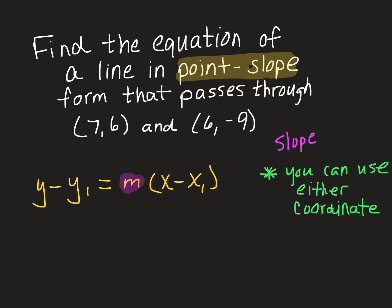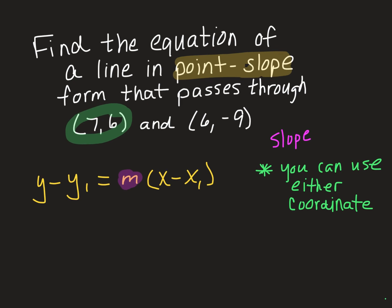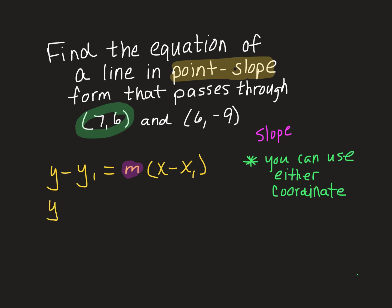So I am just going to choose the first coordinate for no particular reason, just because it's the one that is there first. So I'm going to do that part here where I've got y minus, and I'm going to substitute, instead of writing y₁, I'm going to replace y₁ with 6 because that is the y coordinate that was given to me. But again, I could have used negative 9 instead. It does not matter which one you choose.